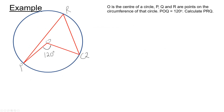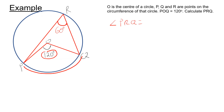Here's an example. We have the angle at the center as 120 degrees — we've got an arc formed by two radii. We can say straight away that the angle at the circumference, PRQ, is going to be half the angle at the center. So angle PRQ is equal to 60 degrees.